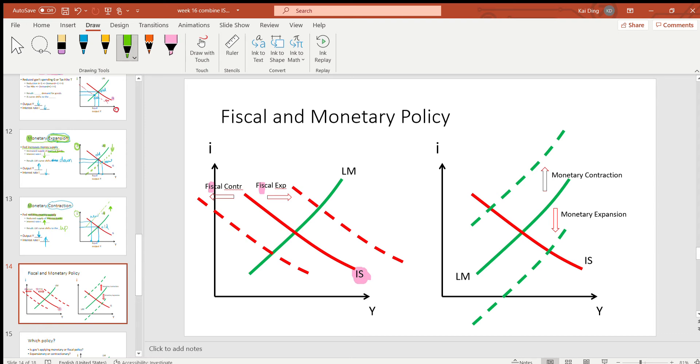It either shifts the IS curve to the right, meaning a higher level of output when there is a fiscal expansion, or it shifts the IS curve to the left, corresponding to a lower level of output when there is a fiscal contraction.